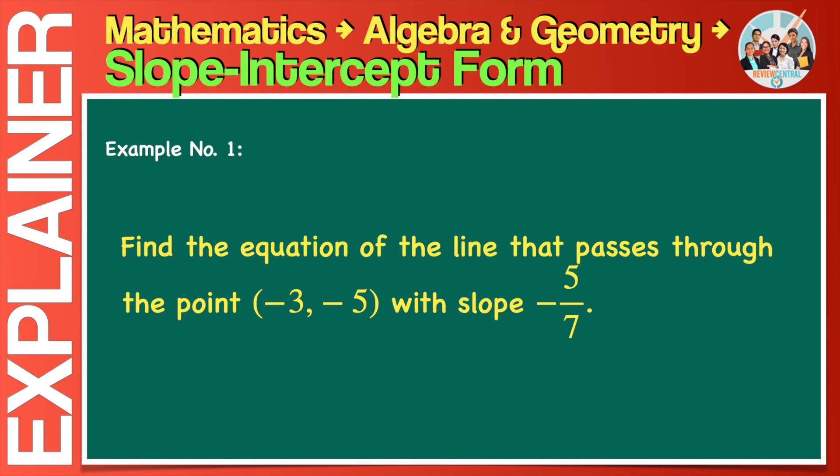Want to give it a try solving this simple problem? The correct answer is 5x plus 7y plus 50 equals 0. By the way, this problem was modeled on an actual question that appeared on the UST entrance test or USTET some years ago.